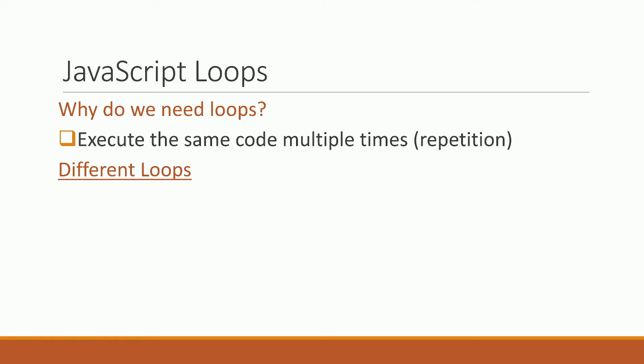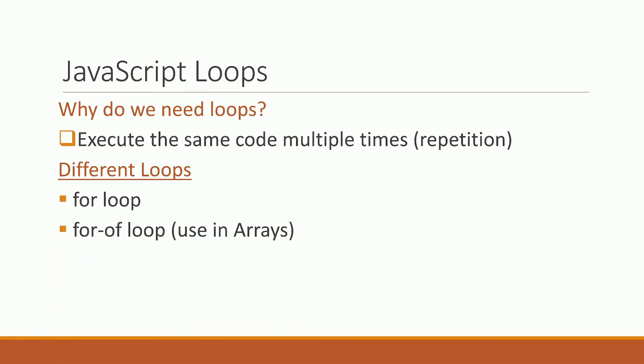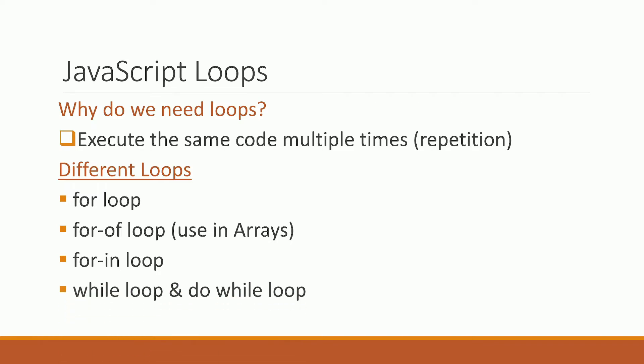JavaScript loops include: the for loop, the for-of loop for arrays, the for-in loop for objects, while loops, and do-while loops.